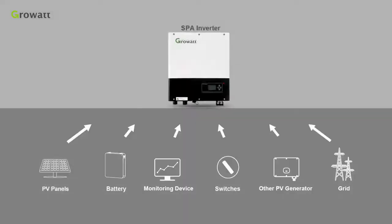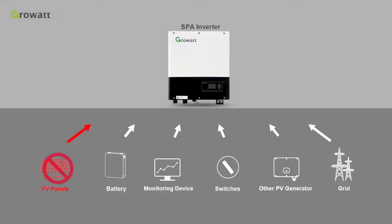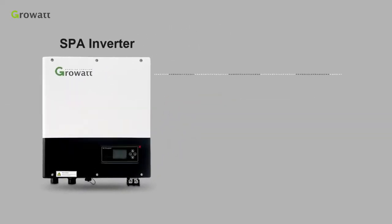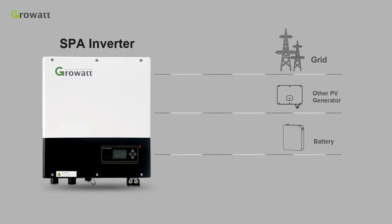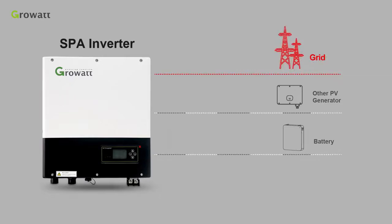Comparing with hybrid device, SPA need not connect to the PV panels. Combined with battery, monitoring device, switches, the other PV generator and grid, it can help to maximize self-consumption. SPA series can store energy provided by the grid or the other PV generator and discharge battery to meet the load demand when the electricity bill is high and when grid power is blackout, it can be used as backup power.